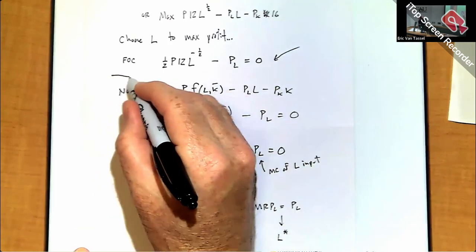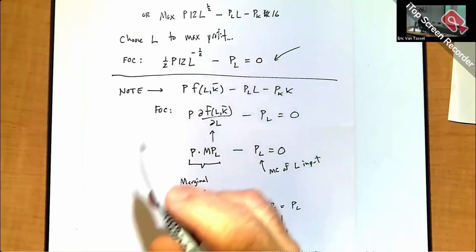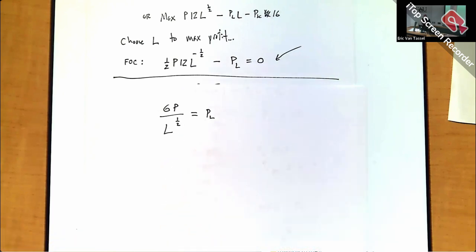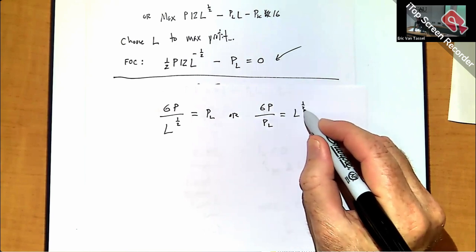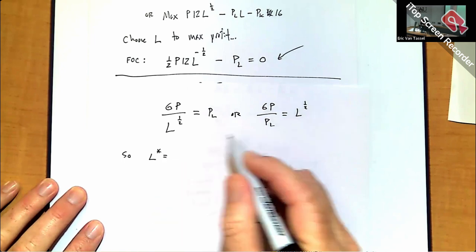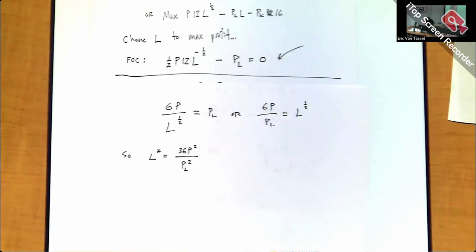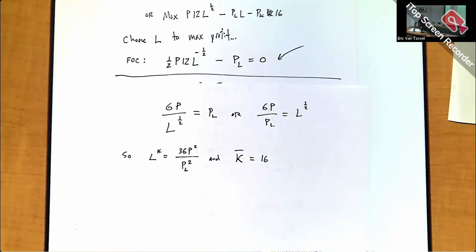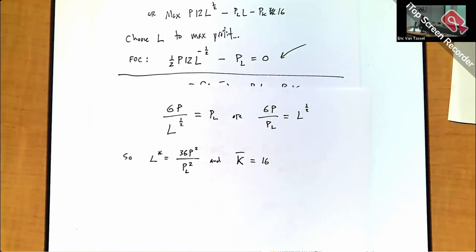Solving the first-order condition: one-half of 12 is 6, so we have 6P over L to the one-half equals PL. Rearranging gives 6P over PL equals L to the one-half. Squaring both sides, we get L star equals 36P squared over PL squared. That's the optimal labor input. Capital is fixed at K-bar equals 16.